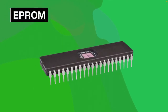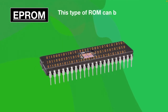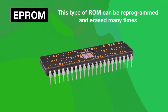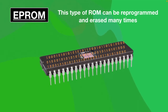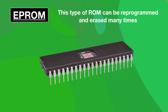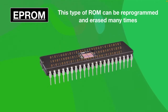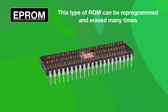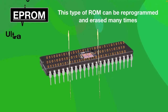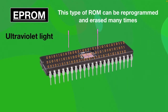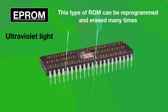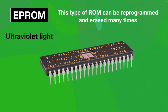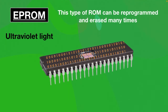EP-ROM, Erasable and Programmable Read-Only Memory, is a type of ROM that can be reprogrammed and erased many times. The technique to erase data is very different — ultraviolet light is passed for around 40 minutes to erase data, so it retains its content until it is exposed to ultraviolet light.